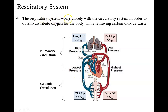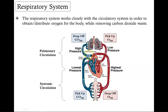The respiratory system works very closely with the circulatory system in order to obtain and distribute oxygen for the body while removing carbon dioxide waste. The top part of the circulatory system is called pulmonary circulation, while the bottom half is called systemic circulation. Pulmonary circulation is where blood picks up oxygen and drops off CO2, while systemic circulation is where it drops off oxygen while picking up CO2. Because blood is being pumped away from the heart, this is called an artery, and this artery experiences high levels of pressure. The veins move blood towards the heart and, being far from the initial squeeze of the heart, there's very little blood pressure there.